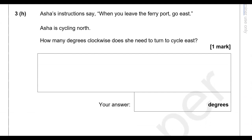Asha's instructions say: when you leave the ferry port, go east. Asha is currently cycling north. How many degrees clockwise does she need to turn to cycle east? Going from north to east clockwise is a right angle, which means 90 degrees.